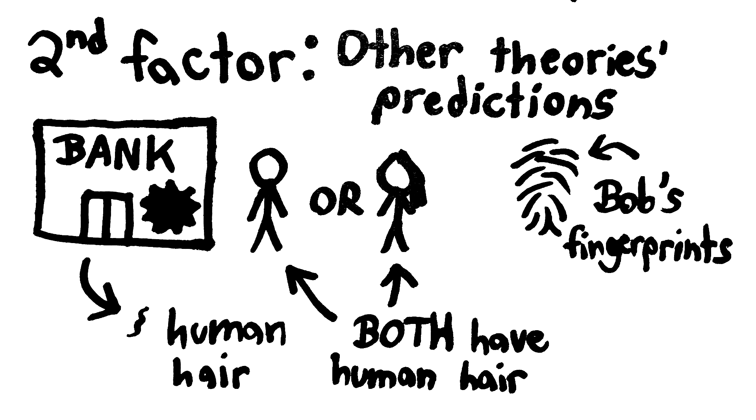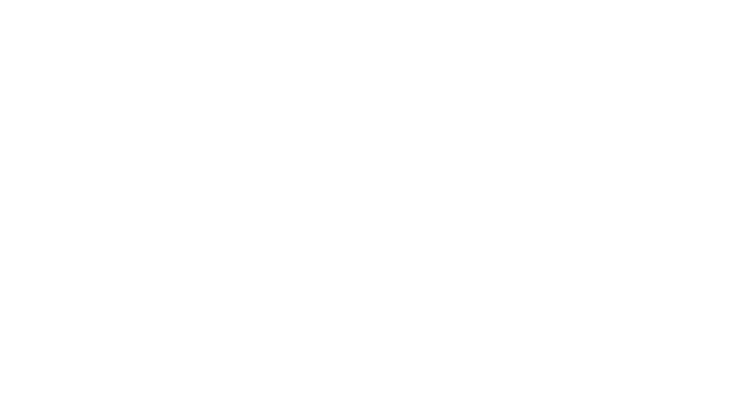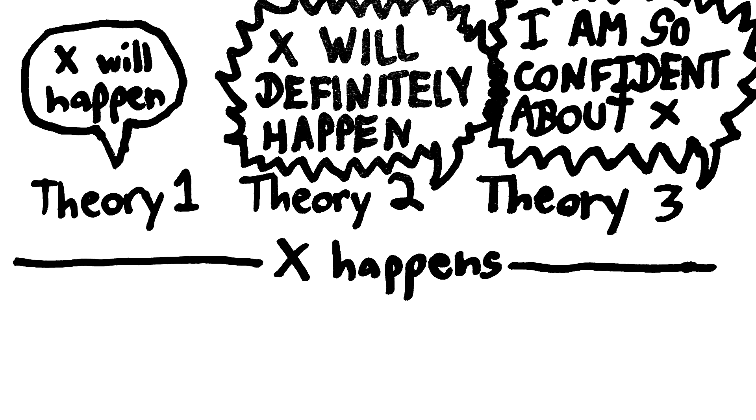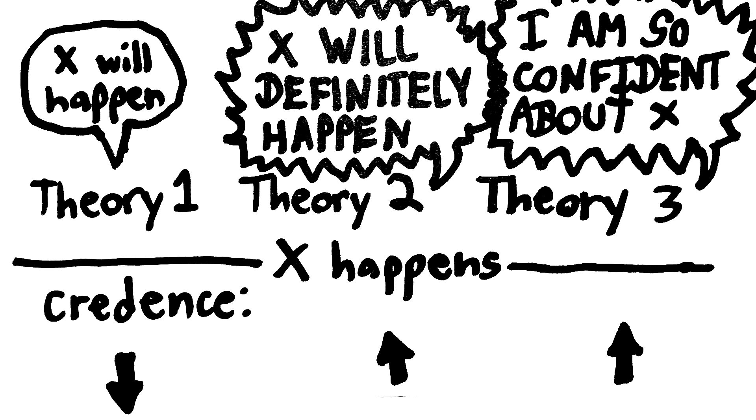To further clarify this idea, let's look at some more examples. Say your theory does a good job of predicting some new information, but all the other theories available predict the information even more strongly than your theory. Well, even though your theory strongly predicted the information, it still did a worse job than the other theories, and your credence in your theory should go down.